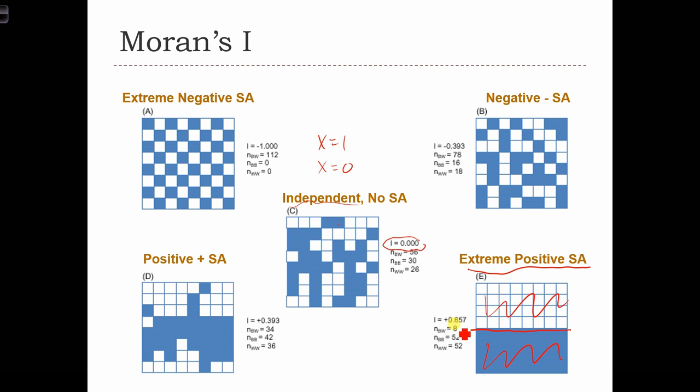In this case, we have a Moran's I close to positive one, it's positive 0.857. Over here we have the extreme negative case with the Moran's I equal to minus one. And here you see we have high, low, high, low, this kind of interspersed pattern, a very regular interspersed pattern of high and low values. Over here we have a slightly negative case of spatial autocorrelation, a Moran's I of minus 0.393.